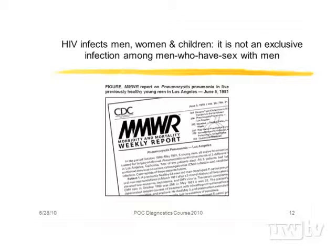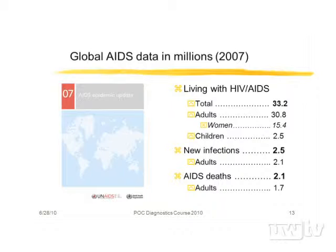Initially described in men who have sex with men, we know this is not a disease exclusively of that group — it involves all people, men, women, and children, homosexual and heterosexual. One of the first major advances in HIV therapy was the ability to block or decrease maternal-child transmission by using antiviral therapies in the mother prior to delivery and in the child at and post-delivery. The face of AIDS has changed, though it's taken a long time for that to be appreciated. We have over 33 million people living with HIV, about 2.5 million new infections per year, and around 2 million deaths per year.